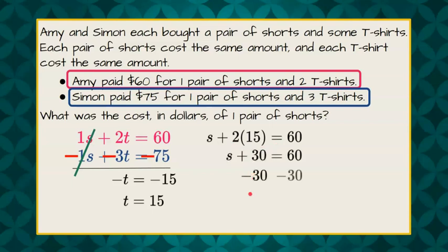Subtract 30 from each side of the equation and solve s equals 30. So I now know that one pair of shorts will cost $30.